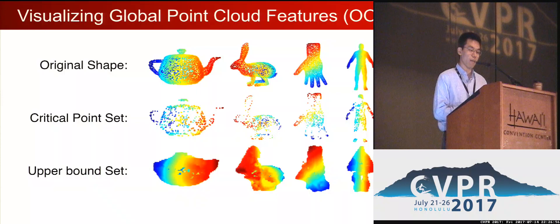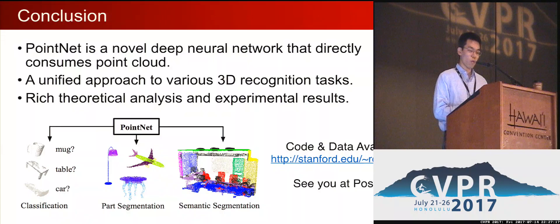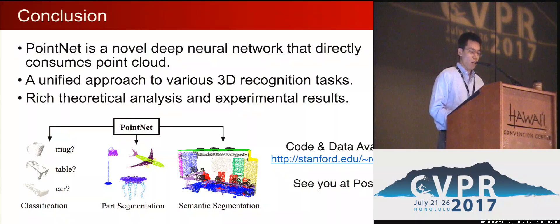We also show similar visualizations for all sampled categories. PointNet is still able to capture basic contours and key structures, meaning that feature learning generalizes well to unseen categories. In summary, we propose a novel deep architecture for point cloud called PointNet, which provides a unified approach to various 3D recognition tasks. We've shown rich theoretical and experimental results to validate our network design. We think our work is just the beginning for 3D deep learning with point cloud — this is going to be very exciting. Our code and data have been released on our website, and we welcome you to see us at the poster session at number nine. Thank you very much.